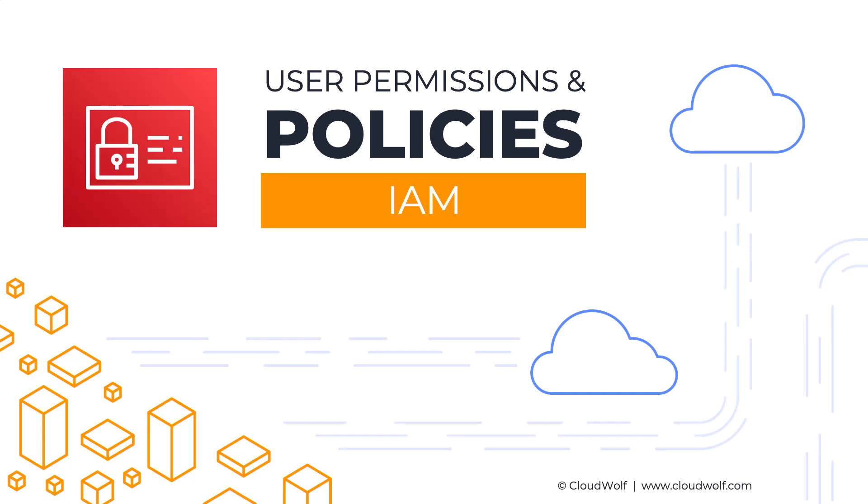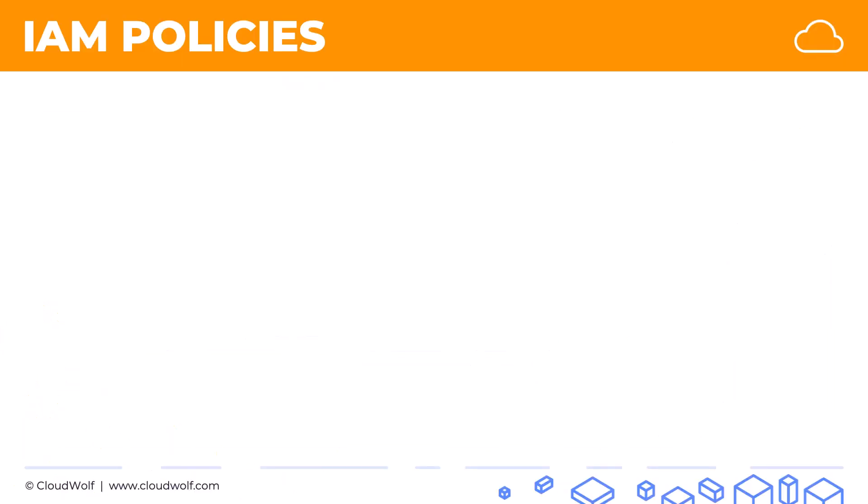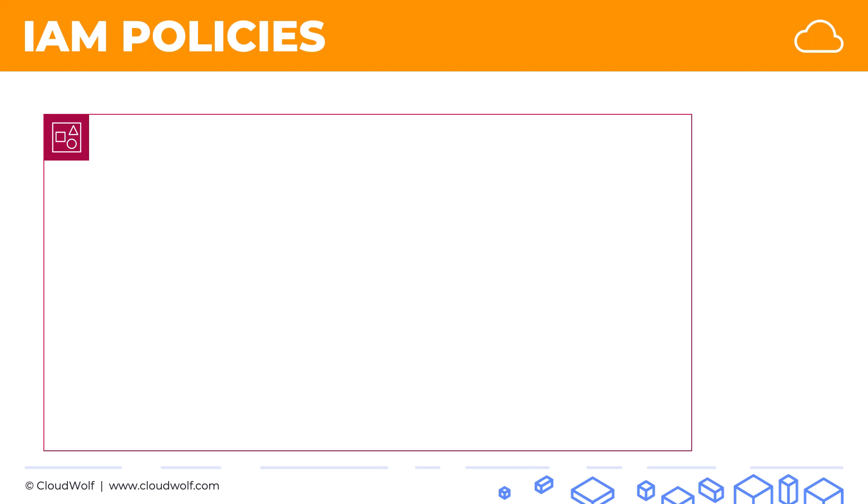Hello and welcome back. Today we've got a very exciting tutorial: User Permissions and Policies in IAM, or Identity Access Management. Here is our AWS account and let's say we have a user named Rick who needs read-only access to S3, or the Simple Storage Service.